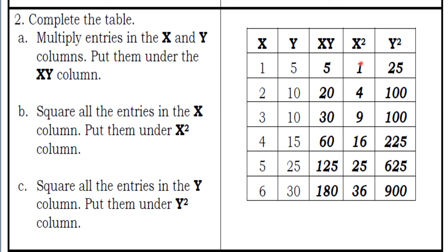Here we have the square of x: 1 squared is 1, 2 squared 4, 3 squared 9, 4 squared 16, 5 squared 25, 6 squared is 36. And for the last, we have y squared: 5 squared is 25, 10 squared is 100, 15 squared is 225, 25 squared is 625, and 30 squared is 900.